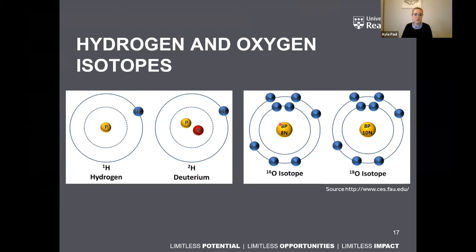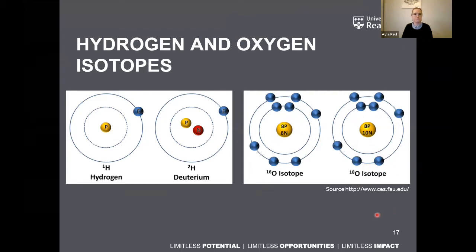Looking at oxygen isotopes — same story. There are eight protons in the nucleus for both. One isotope has eight neutrons, so eight plus eight makes 16 — this is ¹⁶O, the lighter form. The other has eight protons and ten neutrons — eight plus ten makes 18 — so this is ¹⁸O, the heavier form. So there are both lighter and heavier forms of each isotope that we analyze.